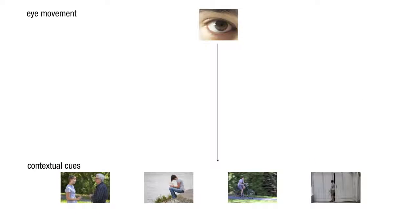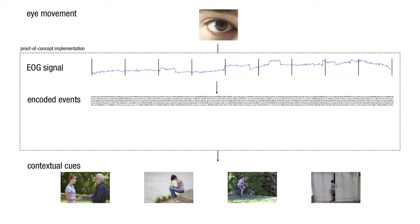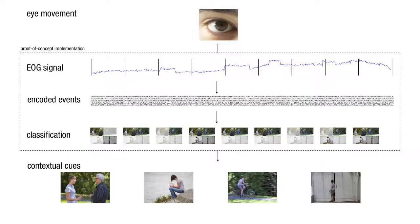Our proof-of-concept system infers those cues by analyzing an eye-movement signal recorded using electro-oculography. From this EOG signal, the system detects eye-movement events such as saccades and encodes them as characters. The resulting string is fed into string-kernel-based classifiers that recognize the four high-level cues.